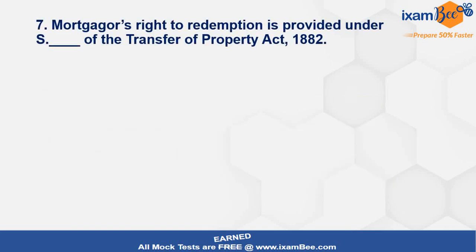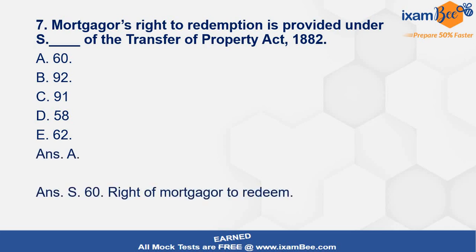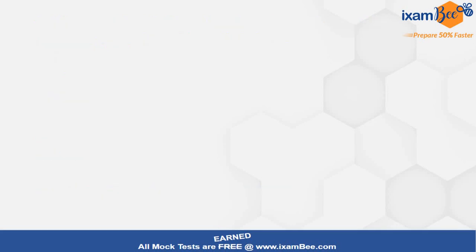Question 6: Mortgager's right to redemption is provided under which section of the TPA? Section-based questions have also been included so that important sections stay in your memory. This is a very easy question — Section 60 deals with the right of mortgager to redeem.